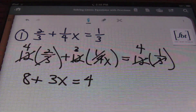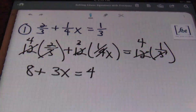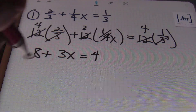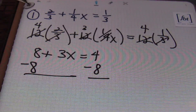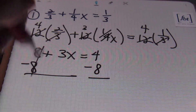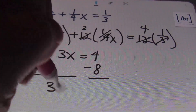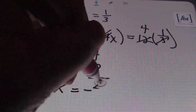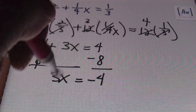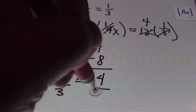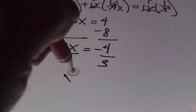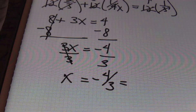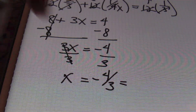From there, I can simply isolate the term with the variable and solve for it like I normally would. That means adding the additive inverse of positive eight — subtracting eight from both sides of the equal sign. The eights cancel out; I bring down three x, which equals negative four. Then I divide both sides by three, ending up with x equals negative four-thirds. Or if you need to write this as a mixed number, it would be negative one and one-third.